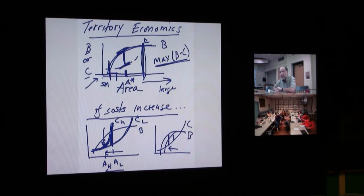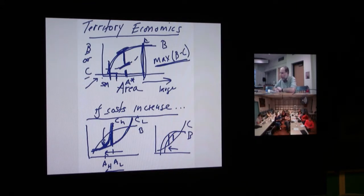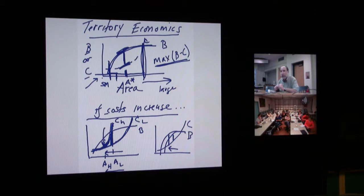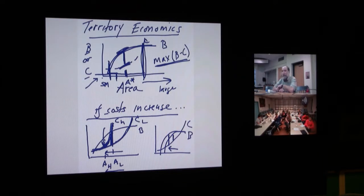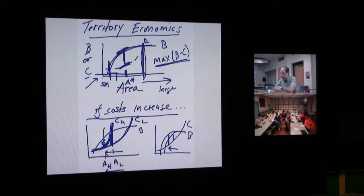How can you quantitate benefit and cost? You can go out and measure it through experiments. You can cut the lawn grass and see how animals change. You can lower the benefits and measure feeding rate, which is proportional to baby production. With binoculars you can measure feeding rate for animals that have territories and those that don't, getting the shape of these curves and then making predictions. You can look at the fighting rate on areas of different sizes, get the shape of the cost curves, ask where the optimum is, and determine whether that's the average we see in the wild.